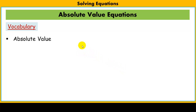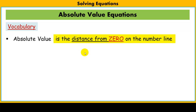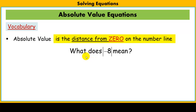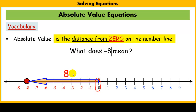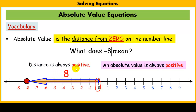Absolute value — I'm sure you've learned about it before, but let's make sure we're all speaking the same language. Technically speaking, the absolute value is the distance from 0 on the number line. So when we say the absolute value of negative 8, we look at the number line — negative 8 is right over here — and we're saying how far is that away from 0? It's 8 units away. It's just a distance, and a distance is always positive. Since a distance is always positive, so is the absolute value — the absolute value is always positive.